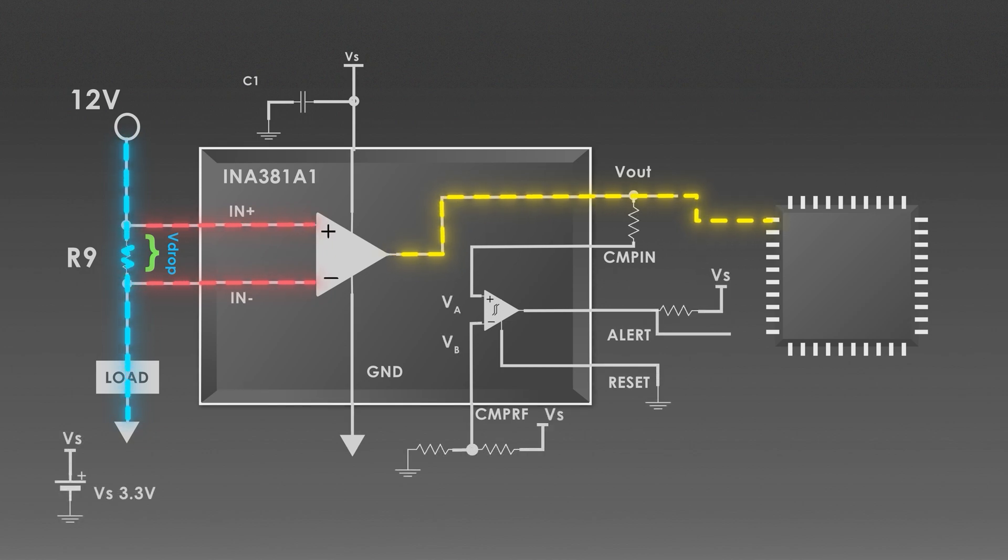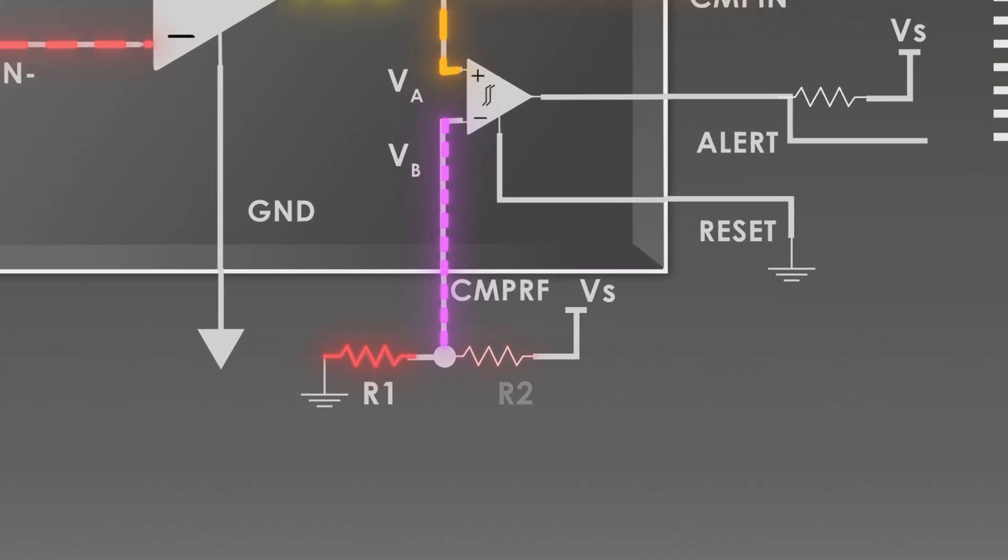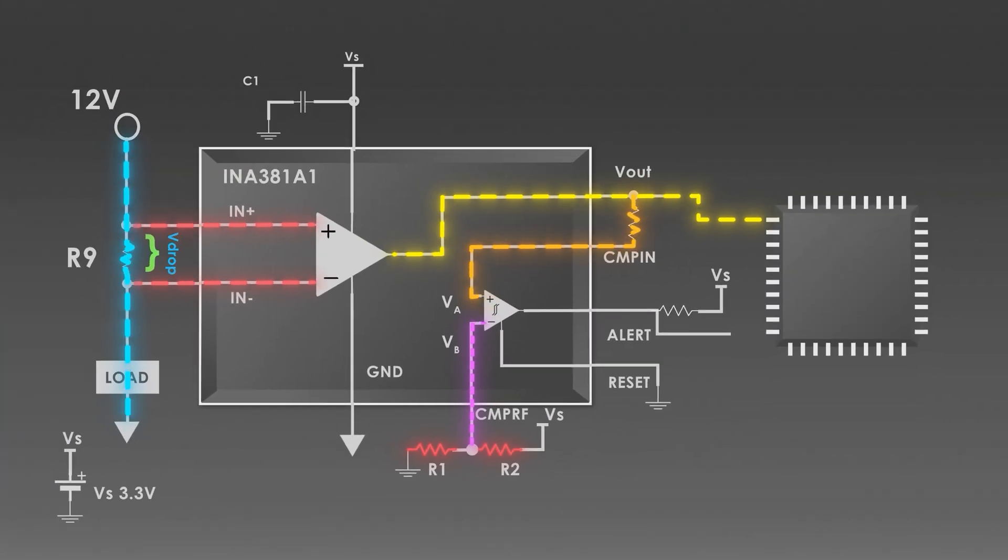As I mentioned, this amplified voltage can be given to an ADC of the microcontroller. Then this comparator compares the amplified voltage against the reference, which is set by this voltage divider resistors R1 and R2. If this input current is within the safe range, then there is no problem. But when the current exceeds the threshold value, the alert pin is triggered, signaling an overcurrent condition.